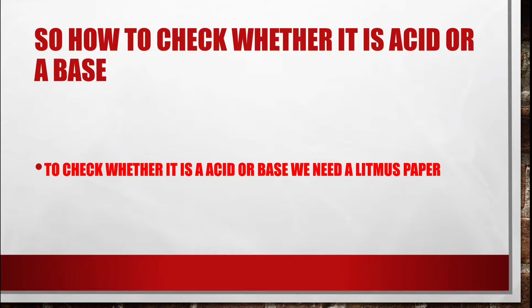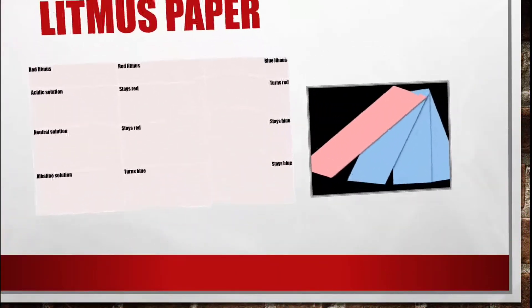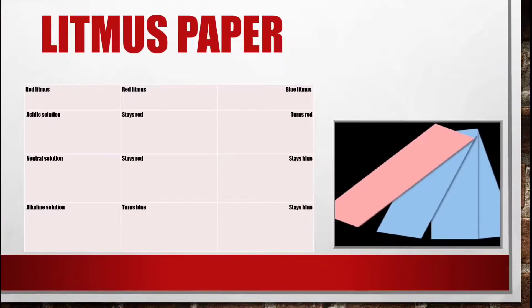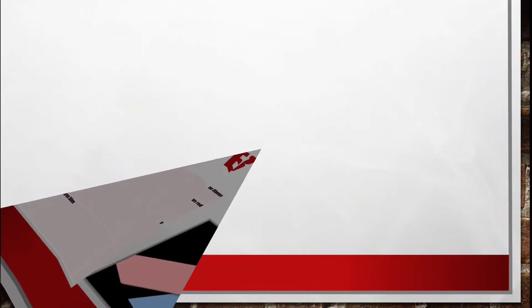We can check whether a substance is an acid or a base using indicators, such as litmus paper. In an acidic solution, red litmus paper stays red and blue litmus paper turns red. In a neutral solution, both red and blue litmus paper stay unchanged. In an alkaline solution, red litmus paper turns blue and blue litmus paper stays blue.